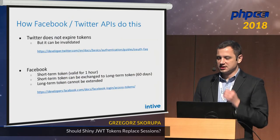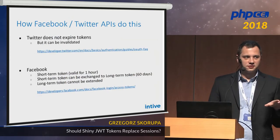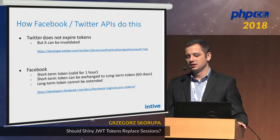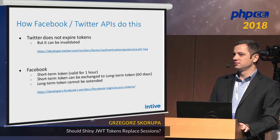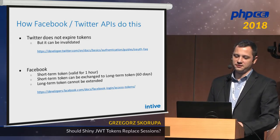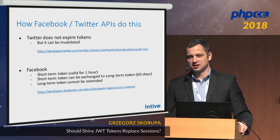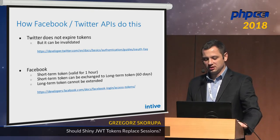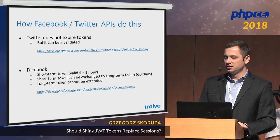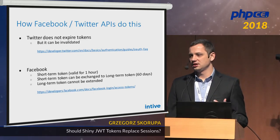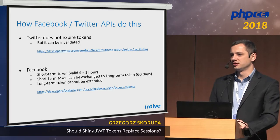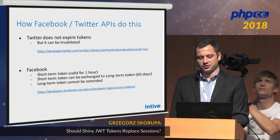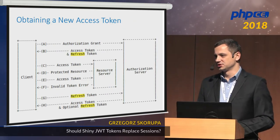Let's look at the big guys — how Facebook or Twitter handle this. Neither of them does it strictly by the book. Twitter resigned from expiring tokens at all; they are valid forever unless someone decides to invalidate them on purpose. Facebook didn't implement the refresh token flow either — they just let you get a short-term token and immediately exchange it for a long-term one. I suspect the reason is they really didn't want all developers in the world to worry about the refresh token flow.